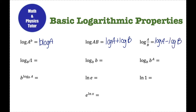If I take the log of base b, or really any base, of one, that's always going to be equal to zero. Remember that I can always rewrite a logarithmic equation as an exponential equation, so this is the same thing as b to the zero equals one. Anything to the zero is always going to be one, which is why log of any base of one will always equal zero. Log base b of b will always equal one — if I take b to the first power, that's equal to itself, so if the base of the log and what you're taking the log of match, that'll always equal one.